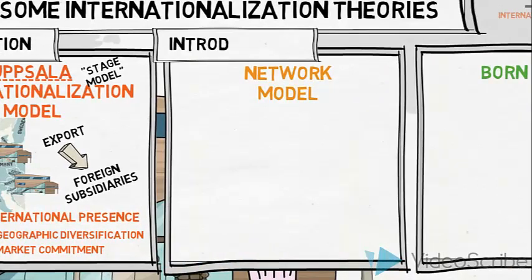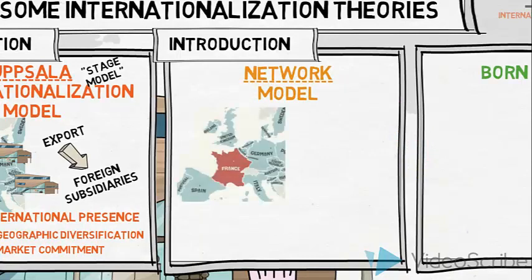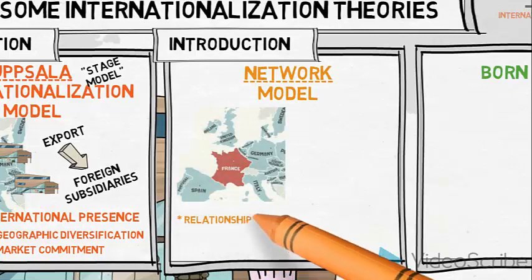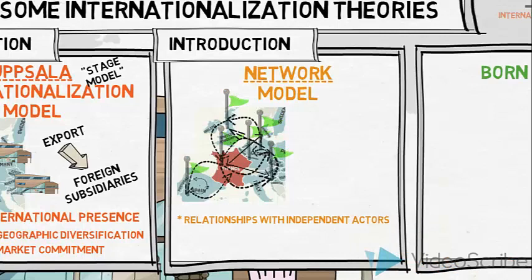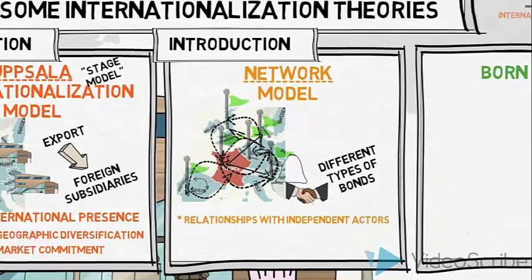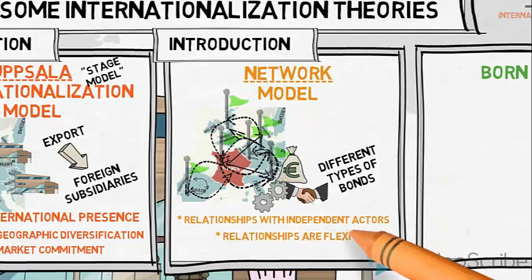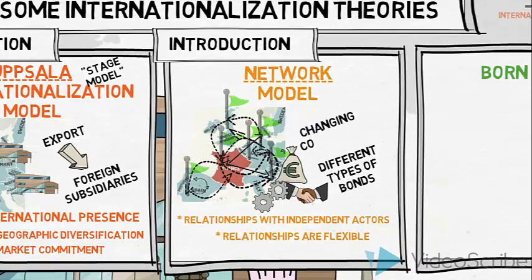The Network Model describes the type of internationalization where an organization establishes a geographic expansion through establishing relationships and networks of independent actors in one or several foreign markets. The network is established through different types of bonds — these could be personal, legal, economical, or perhaps technical. The relationships are flexible, which makes this model suitable in environments with regularly changing conditions.